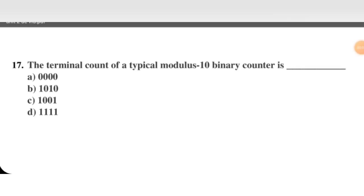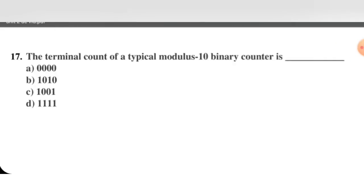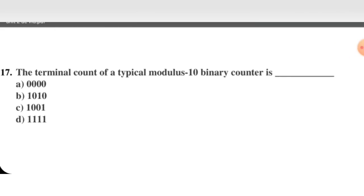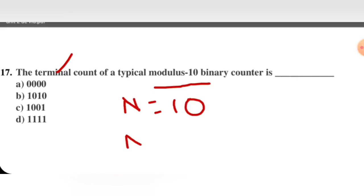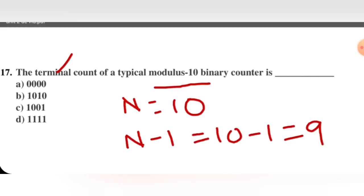Next question: the terminal count of a typical mod 10 binary counter. Terminal count means the maximum count after which counting stops. For mod 10, N equals 10, so the maximum count is N minus 1 equals 9. In binary, 9 is written as 1001. C is the right option.